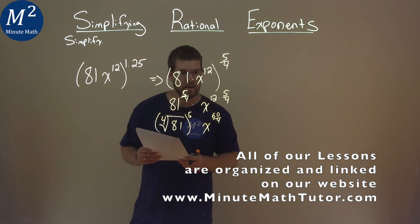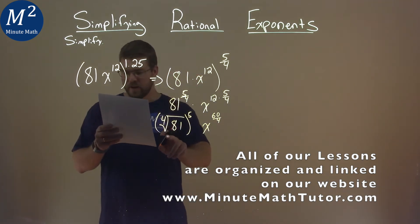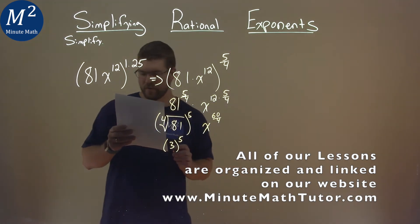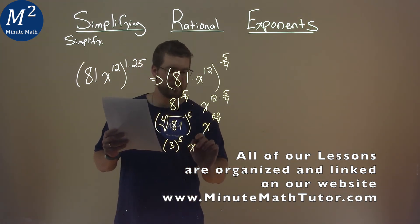Keep on simplifying here. Fourth root of 81 comes out to be 3, still to the 5th power. But 60 divided by 4 is 15, so we have x to the 15th power.